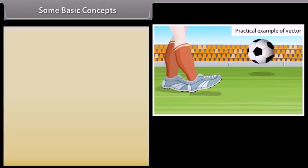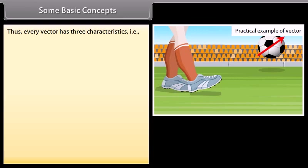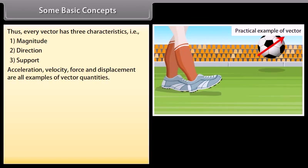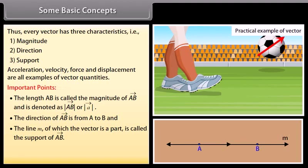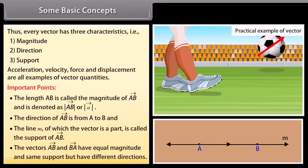Such a directed line segment represents a vector and is denoted by vector AB or vector A. Every vector has three characteristics: one, magnitude; two, direction; and three, support. Acceleration, velocity, force, and displacement are all examples of vector quantities. The length AB is called the magnitude of vector AB, denoted as the modulus of vector AB. The direction of vector AB is from A to B. The line M of which the vector is a part is called the support of vector AB. Vectors AB and BA have equal magnitude and same support but have different directions.